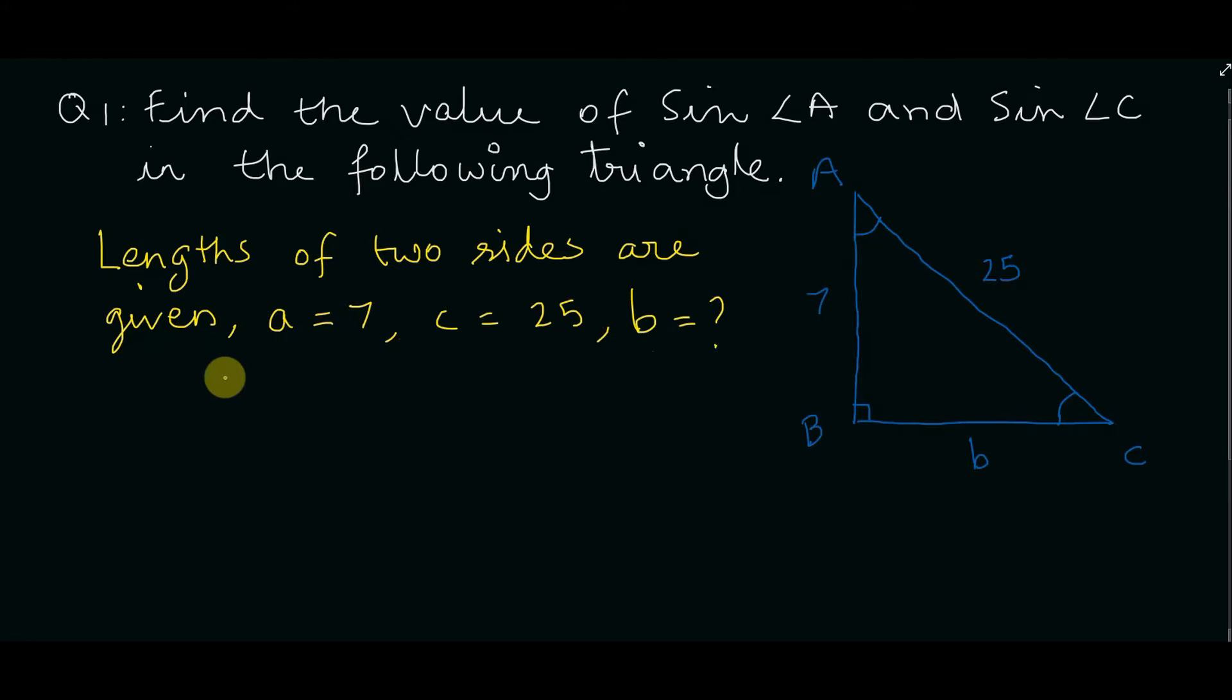First we have to find the length of the missing side and then calculate the sine value of angle A and angle C. We can find the missing side using the Pythagorean theorem because two sides are given.